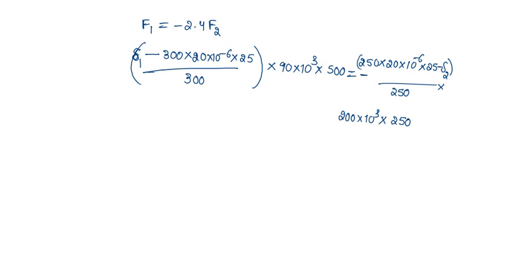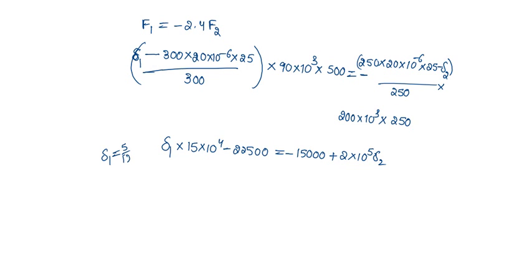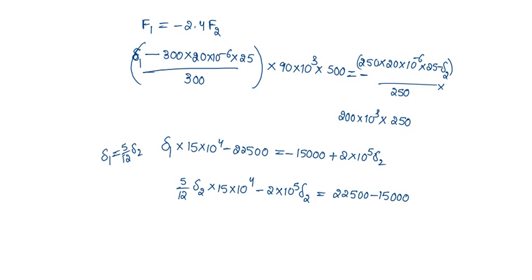Note a negative sign here. On simplifying: delta 1 into 1.5 into 10^4 minus 22500 equals minus 1500 plus 2 into 10^5 delta 2. We know delta 1 equals 5 by 12 delta 2. Substituting 5 by 12 delta 2 into 1.5 into 10^4 minus 2 into 10^5 delta 2 equals 22500 minus 1500, from which delta 2 can be obtained.